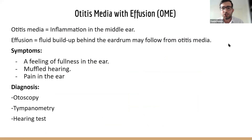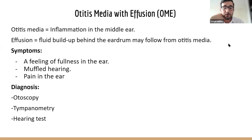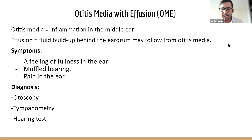Next is otitis media with effusion (OME), defined as the presence of fluid in the middle ear without signs or symptoms of acute ear infection. It may occur spontaneously due to poor eustachian tube function or as an inflammatory response following acute otitis media. The eustachian tube clears fluid from the middle ear and ensures it stays air-filled. OME is more common in children due to an immature eustachian tube.